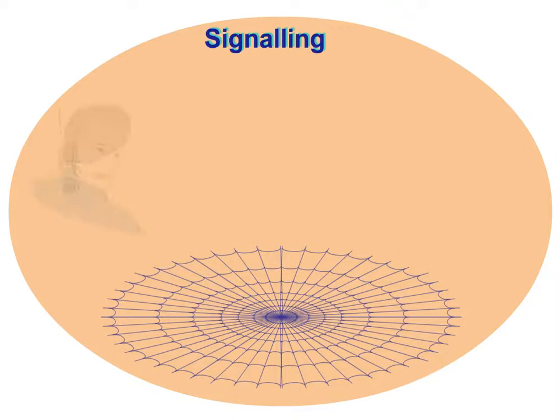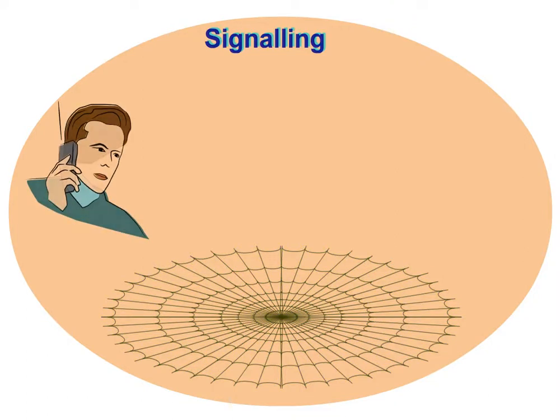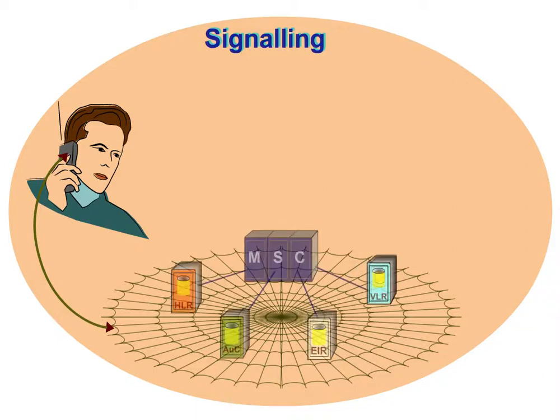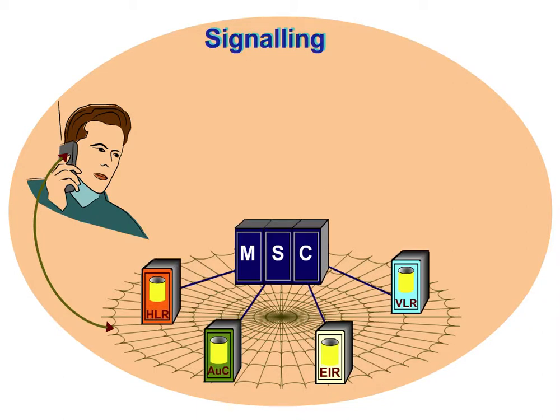To set up a call, signaling takes place between subscriber interface points — that is, between the user and the network — as well as between different network elements.